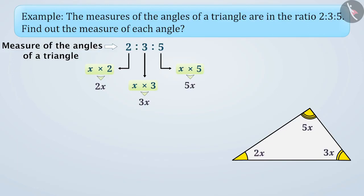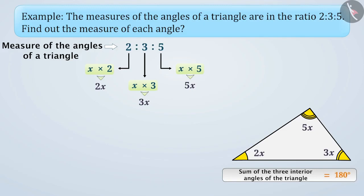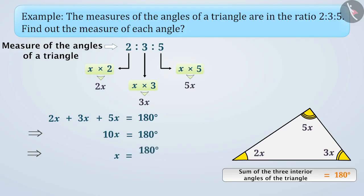But, according to the angle-sum property of a triangle, the sum of interior angles is 180 degrees. Therefore, we can say that 2x plus 3x plus 5x is equal to 180 degrees. That means 10x is equal to 180 degrees. We can write this as x is equal to 180 degrees divided by 10. That is, x is equal to 18 degrees.